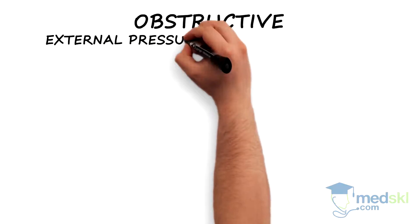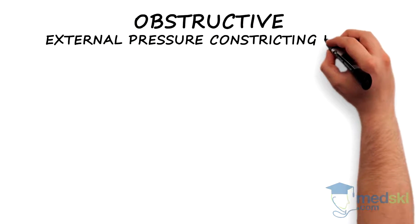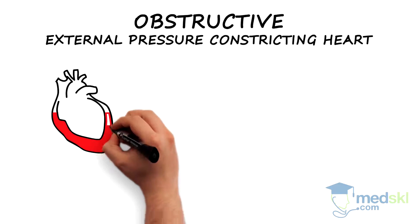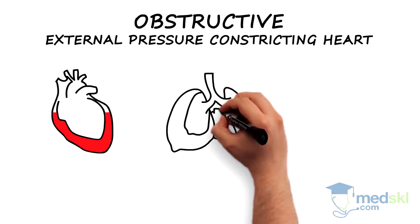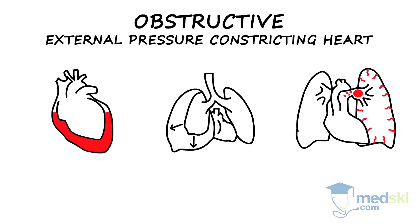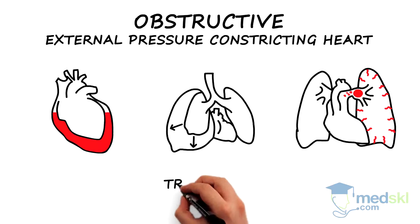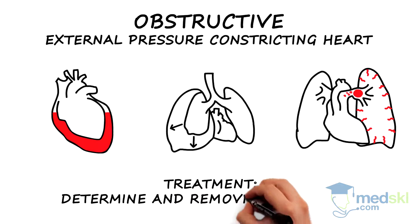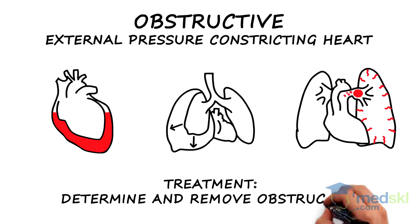Obstructive shock results from external pressure constricting the heart and preventing it from filling properly, thereby reducing the amount of blood pumped out. The three main causes are cardiac tamponade, tension pneumothorax, and massive pulmonary embolism. Treatment requires determining the type of obstruction and removing it.